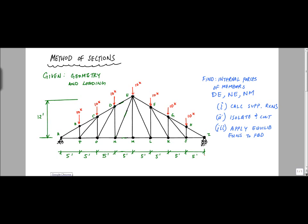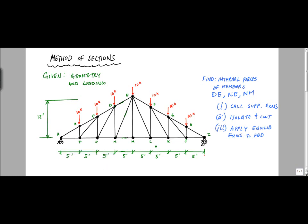Every bay of this truss has about 5 feet of spacing, so it's 5, 10, 15, 20, 25, 30, 35, 40 feet long. And it's a roof truss — it's 12 feet tall, all the way up to point E.